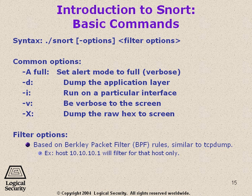Here are the basic commands: snort, then some options, and then some filter options. Those filter options are the Berkeley Packet Filter options, the BPF rules, which are very similar to tcpdump. For example, 'host 10.10.10.1' will filter only that host, or you could say 'net 192.168.whatever', or you could say source port or destination port equals, and it would filter by just that traffic.